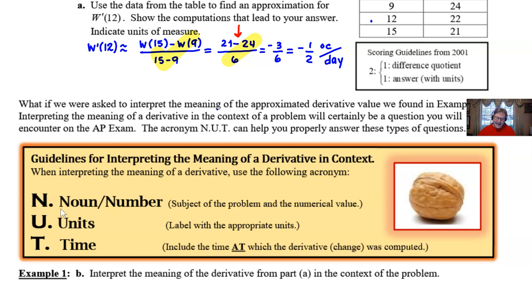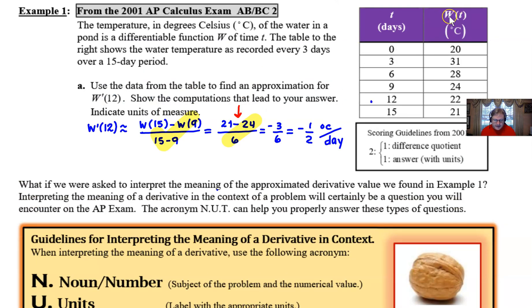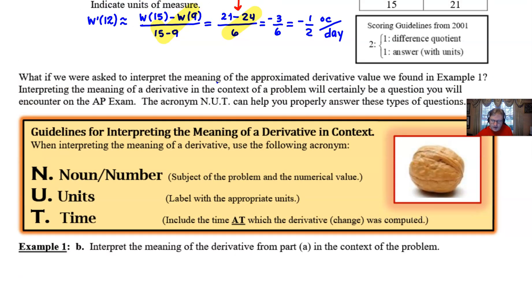So if we add an extra little part to our example one, interpret the meaning of the derivative in this context, what would we say? Well, we know that our answer was negative one half. The fact that we were negative kind of conveys that something is getting smaller. Or decreasing, that's a great word. Well, what is decreasing? Give me that noun. Well, this stood for the temperature of water, right? That's what that WT was. So I think we could start with a statement already, with a phrase.